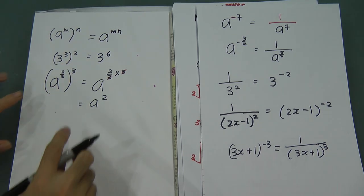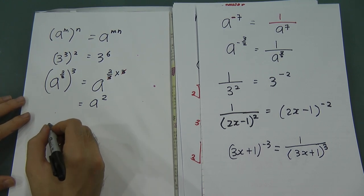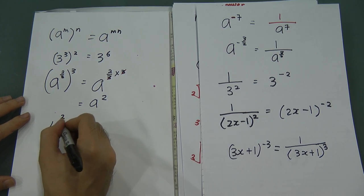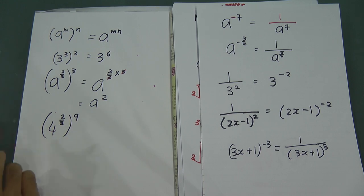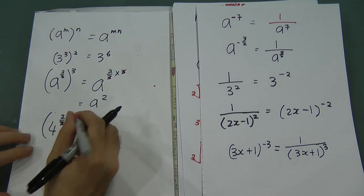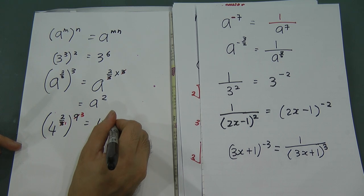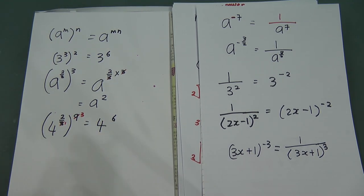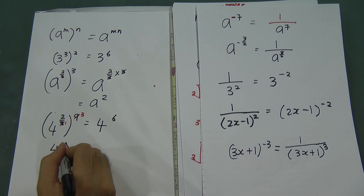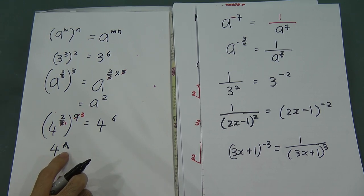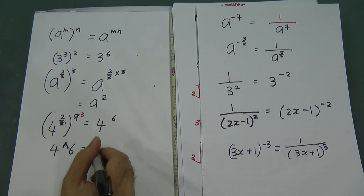Another example: a to the power of 2 over 3, and the whole thing to the power of 3. Multiply the powers: 2 over 3 times 3 — the 3s cancel — giving a to the power of 2. Also, 4 to the power of 2 over 3, whole thing to the power of 9: simplify 9 over 3 to get 3, then 2 times 3 equals 6, so the answer is 4 to the power of 6, which equals 4096.